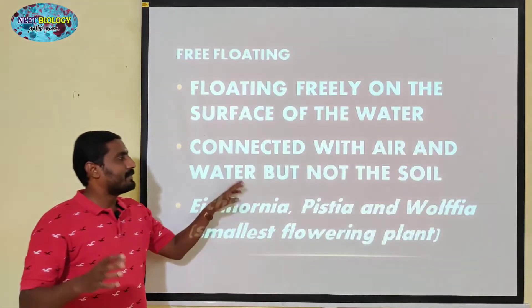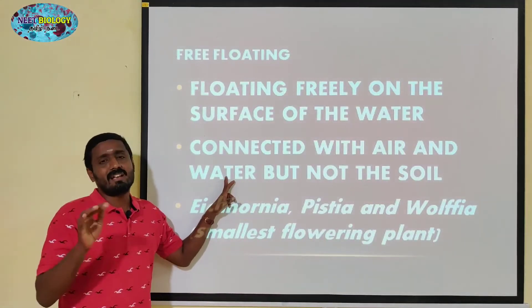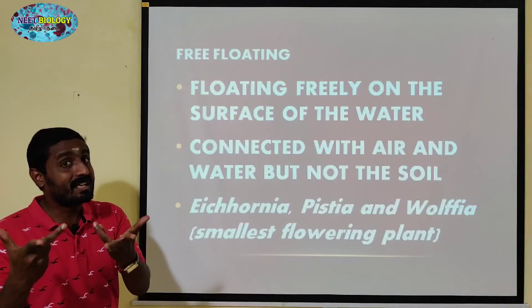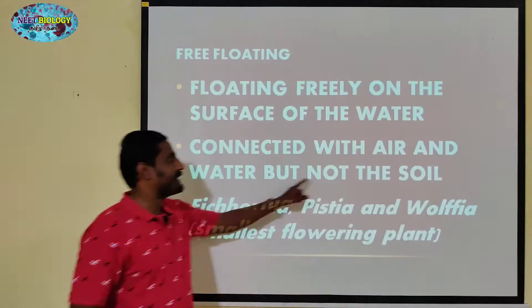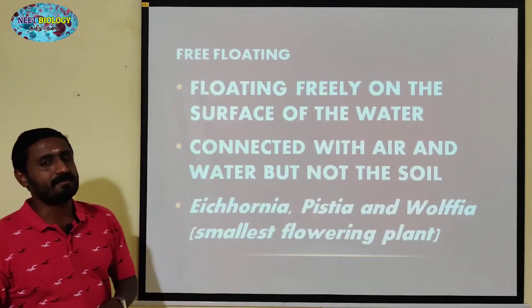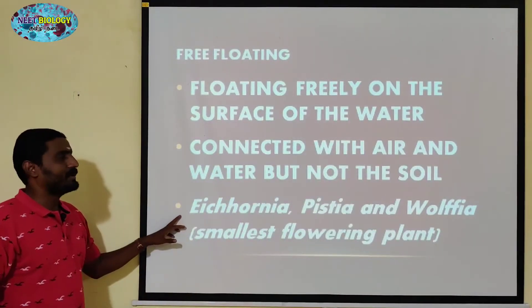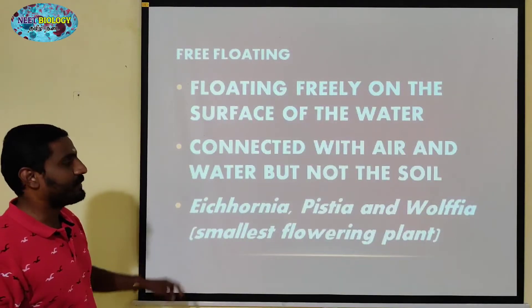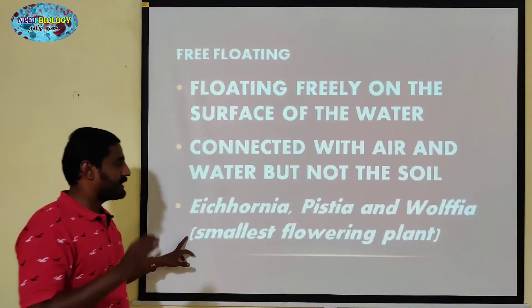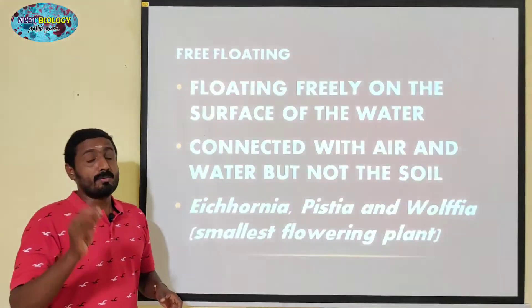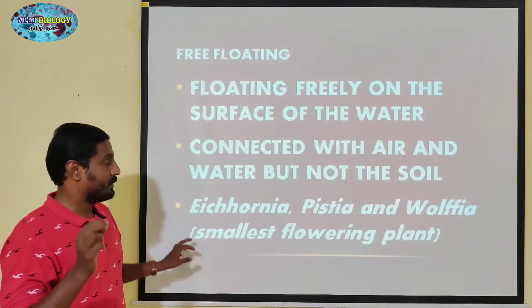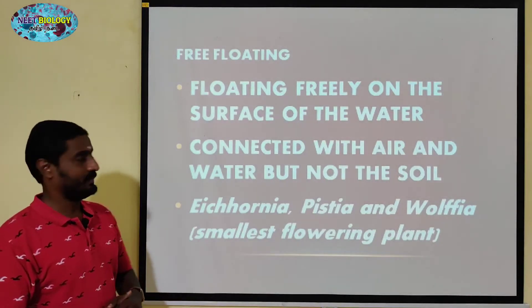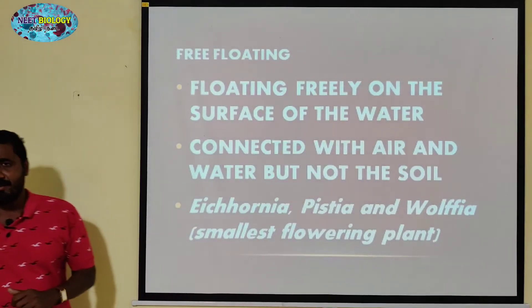The stem, roots, and the ground are connected, but not attached to the soil. Examples are Eichhornia, Pistia, and Wolffia. This Wolffia plant is the smallest flowering plant — this is worth one mark. Wolffia is the smallest flowering plant.